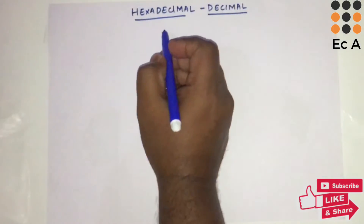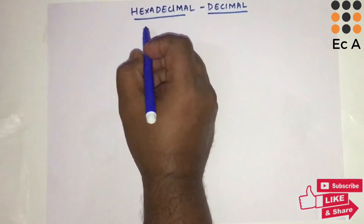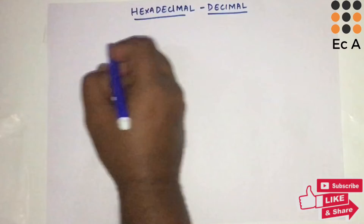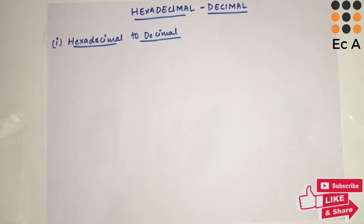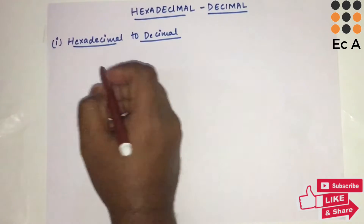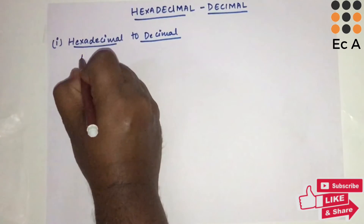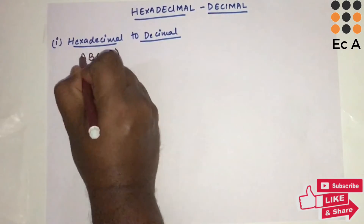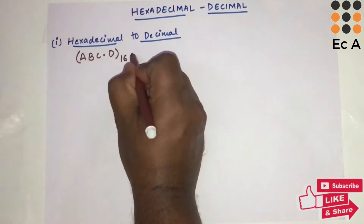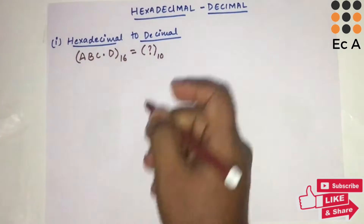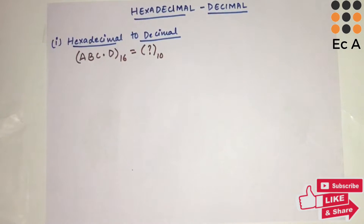Hello friends, welcome to EC Academy. In this lecture we will understand the conversion between hexadecimal and decimal number systems. First, let us see the conversion from hexadecimal to decimal. Let us take an example: ABC.D base 16. This is the hexadecimal number that has to be converted to the decimal number.